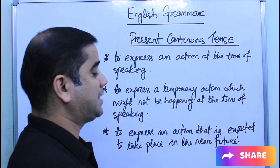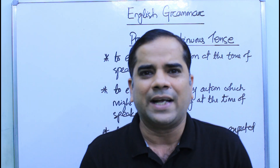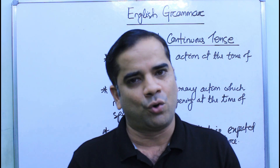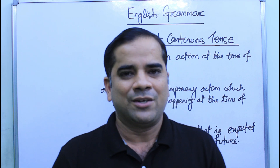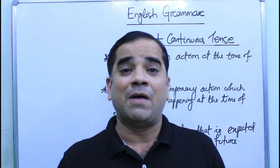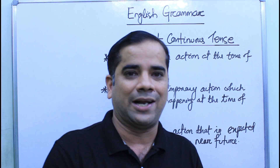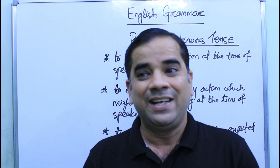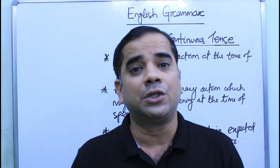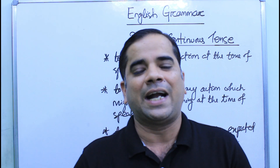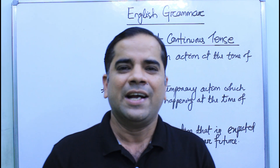Present continuous tense is also used to express an action expected to take place in the near future — meaning in some hours, or a day or two. For example: 'I am going to Mumbai tomorrow,' 'My friends are coming to my home this evening,' 'We are going to have a party this evening.' Tomorrow and this evening are near future, so we use present continuous tense.